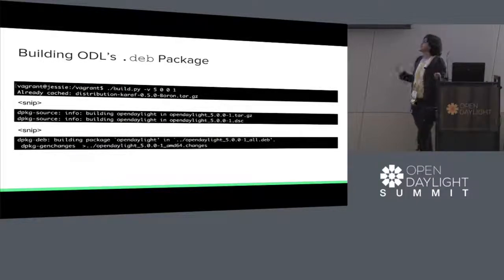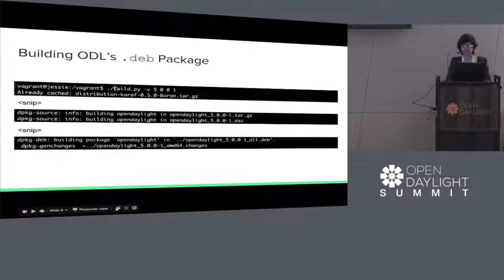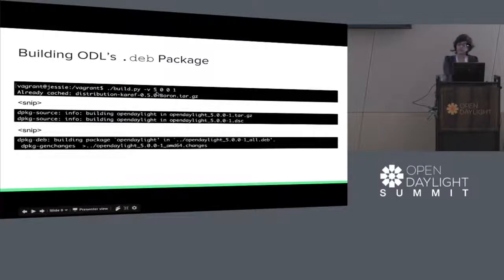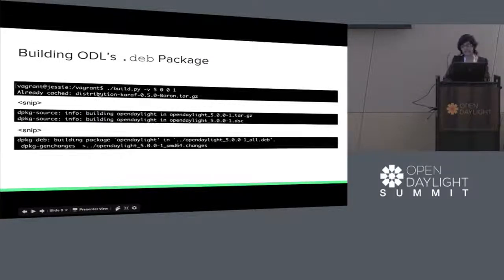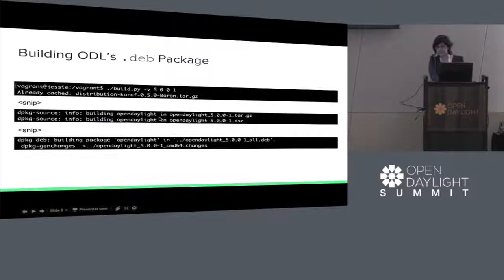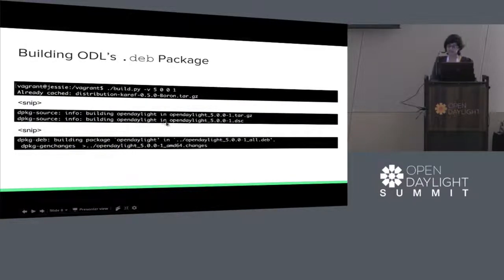To build a .deb package, we execute the script build.py with the arguments — this is the major version, this is for the Boron release, the minor version, the patch version, and the .deb version that we want. Since I already had the .tar.gz file downloaded, it says already cached — this is what cache.py does. Finally in the end, we see that the .deb is being built.